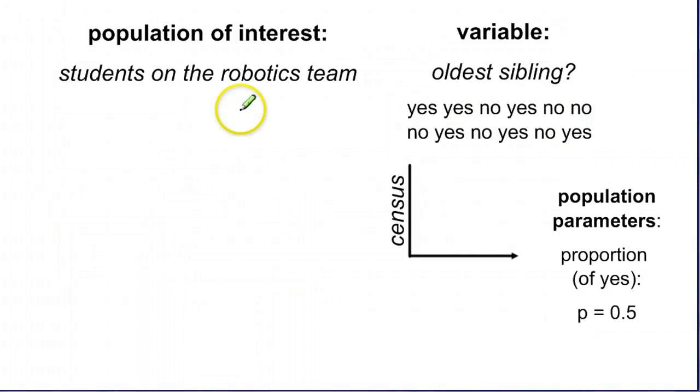Let's take a different type of question now. So we just dealt with a numerical question. How many siblings do you have? We still have our same population, students on the robotics team. We're asking them a slightly different question. Are you the oldest sibling? And the 12 people responded either yes or no. Yes or no. So they said one of those two answers. And this is when we're dealing with categorical variables. We often have two choices or maybe sometimes more. And what we have to do is calculate the fraction or proportion of people who answered in one particular way.